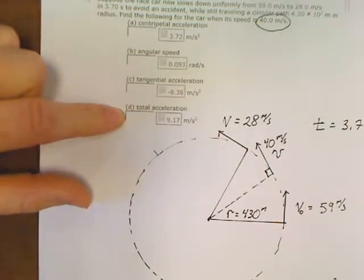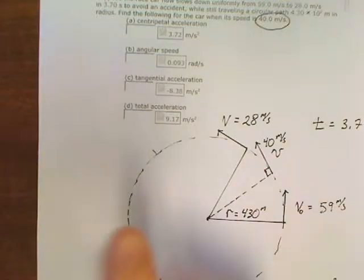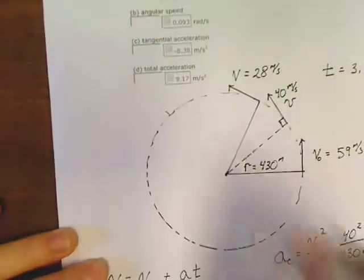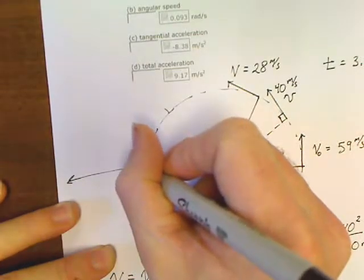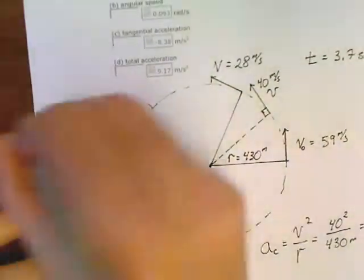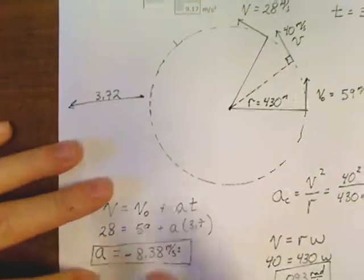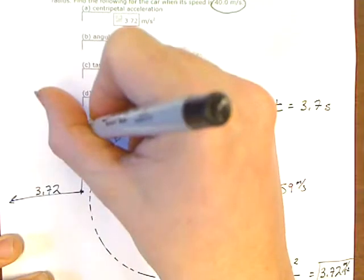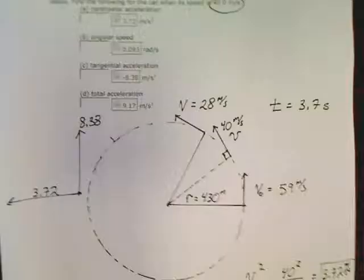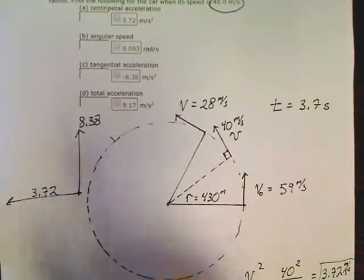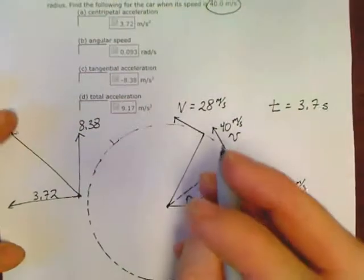Part D says, find the total acceleration. Wait a second. I can do this. Total acceleration means find the acceleration. You've got a centripetal acceleration pointing towards the center of 3.72. You've got a tangential acceleration of 8.38. The negative doesn't matter. Look at what you've got.